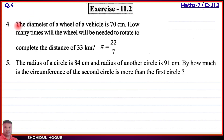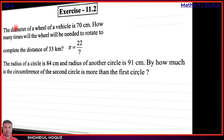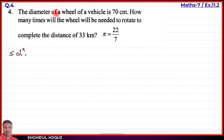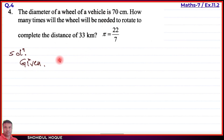Question number four: The diameter of a wheel of a vehicle is 70 centimeter. How many times will the wheel need to rotate to complete the distance of 33 kilometer? Take pi value as 22 by 7. Given: diameter d of the wheel is 70 centimeter.